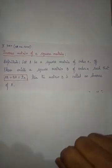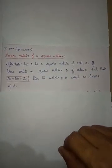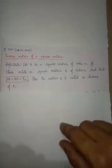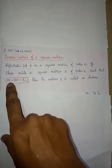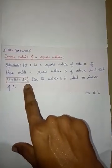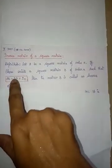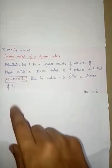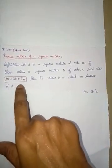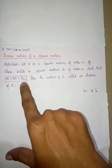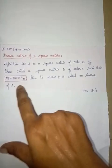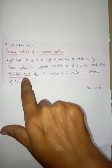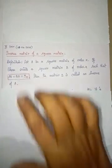Let A be a square matrix of order n. Then there exists a square matrix B of order n such that AB is equal to BA is equal to I_n. Then B is called the inverse of A. So the product of these two matrices should be the identity matrix. This is the important result for inverse.